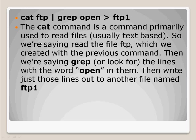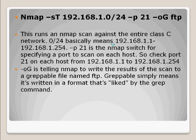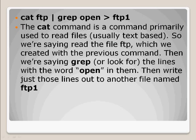The next line in the script does a cat ftp — reading the file we just wrote out — and pipes the results to grep. We're grepping for 'open', which will show us the actual IPs that came back with FTP open. We then write the results of that grep out to another file named FTP1.